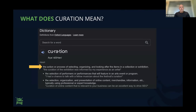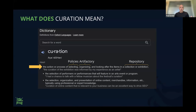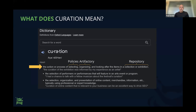What does curation mean? From the English Oxford Dictionary: curation is the action or process of selecting, organizing, and looking after the items in a collection or exhibition. In the JFrog world, how you select packages is via the policies we have. We organize packages coming in using Artifactory — your artifact and binary lifecycle manager. And then the repository is where you actually keep the packages. So we do exactly what the meaning of curation does for your open source packages in your software development lifecycle.